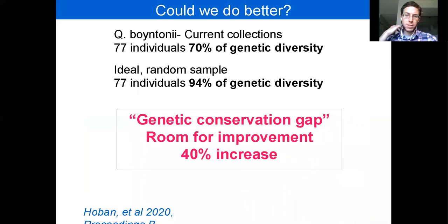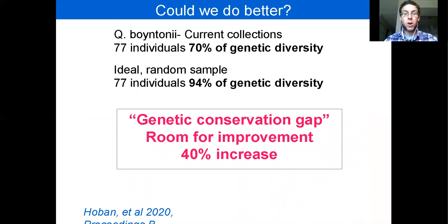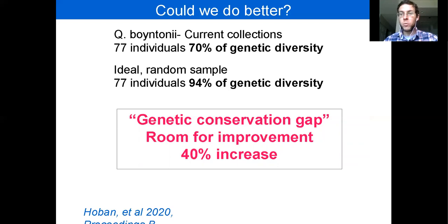This is what my colleagues and I have called the genetic conservation gap. There can be a large increase in the amount of genetic diversity — on average about 40% across the species we looked at — which is a really big conservation impact when we're often trying to improve things by just a few percent.